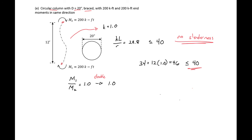And that's how we check several different columns to see if we need to consider slenderness or not.